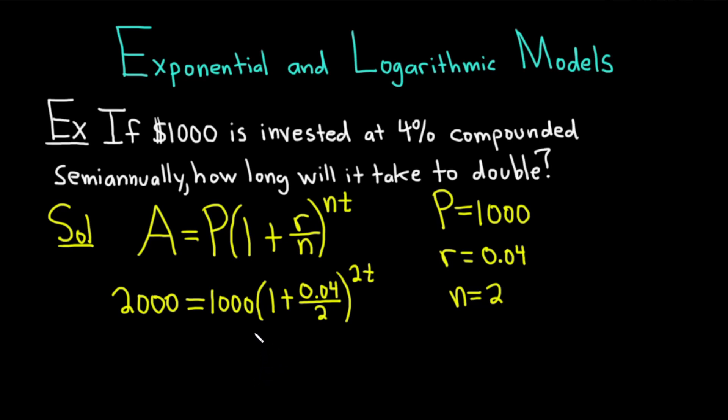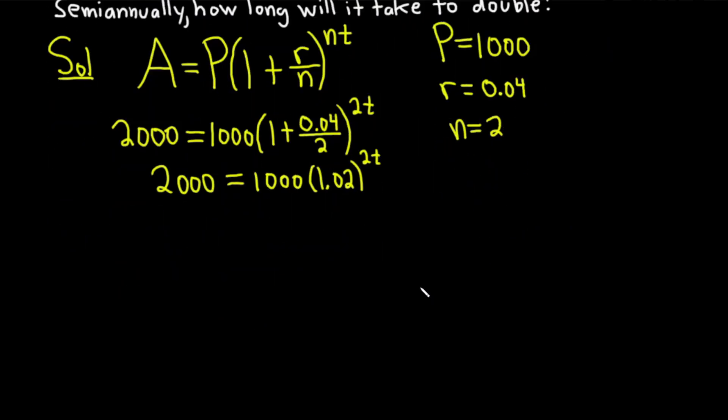We can clean this up quite a bit. Let's go ahead and just add these numbers. 1 plus 0.04 over 2, you can work this out. So we have 2,000 equal to 1,000, and this ends up being, if you put it in a calculator, 1.02 to the 2T. And we need to find T. T is the time it takes for our money to double. So we can start by getting rid of this 1,000, simply dividing both sides of our equation. So we get 2 equals 1.02 to the 2T.